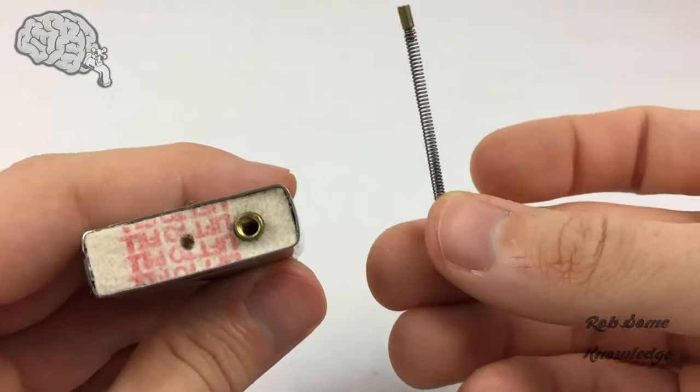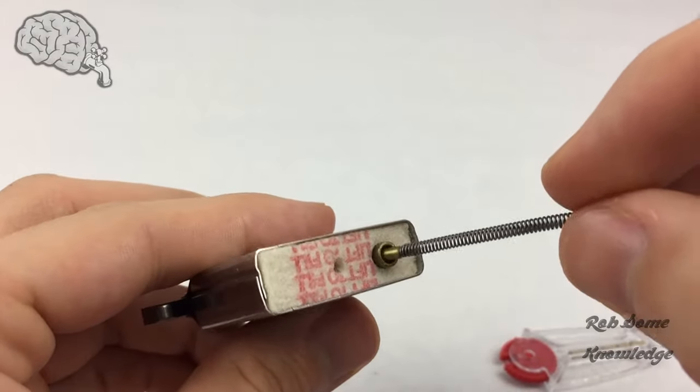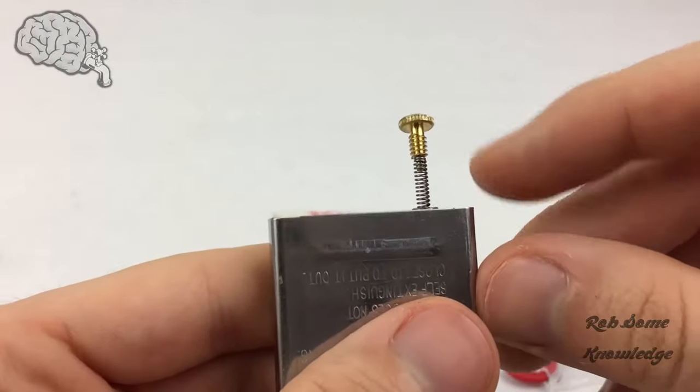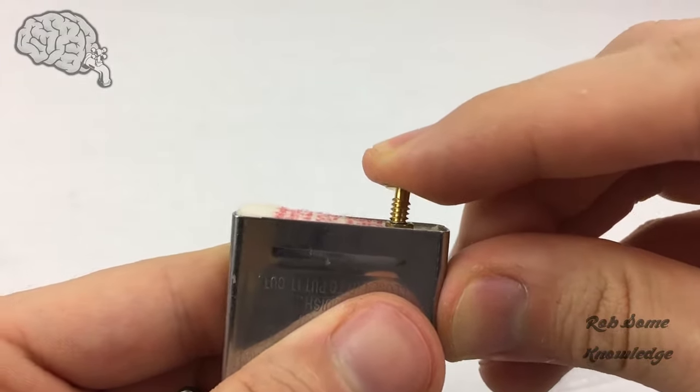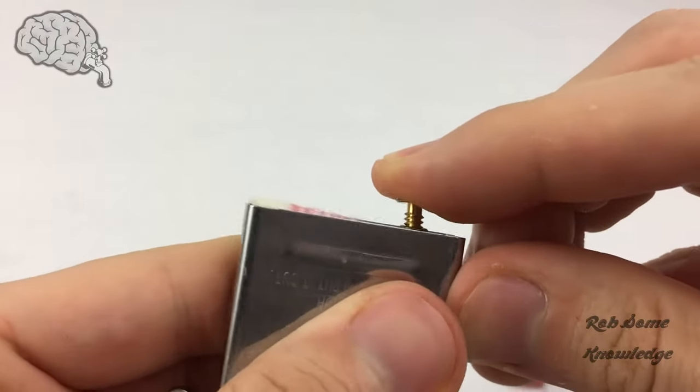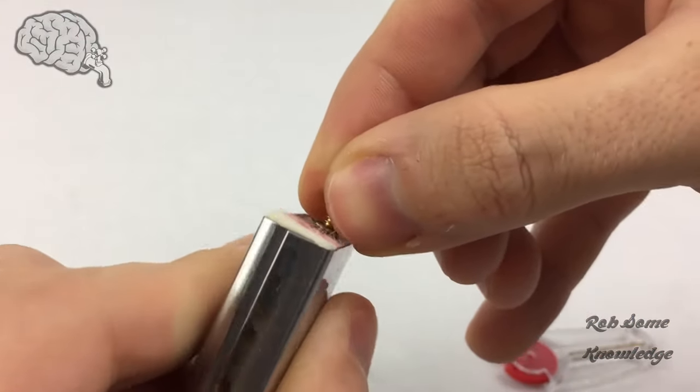After your flint is in there, get your little flint pusher rod and spring and slide that in there. To get it started, you're probably going to have to use your finger to press it down in and give it a slight turn. Make sure you're not cross-threading the screws.